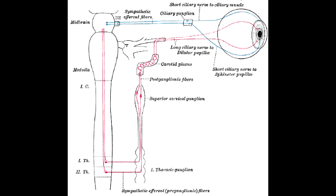Describe the route of the third order neuron for mydriasis. The third order neuron travels from the superior cervical ganglion through the carotid plexus, then through the cavernous sinus, and eventually enters the orbit as the long ciliary nerve to the pupillary dilator muscles.